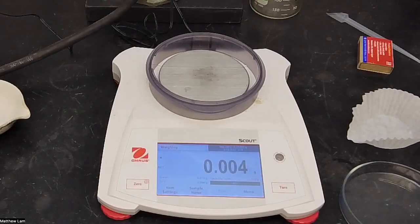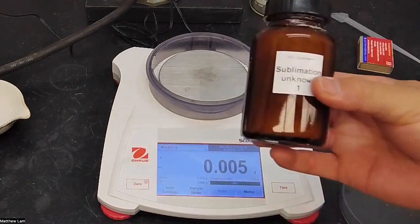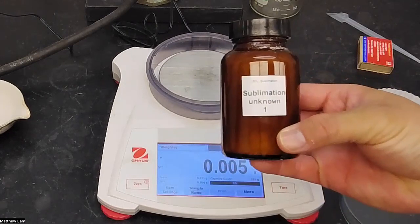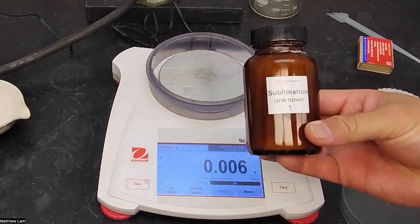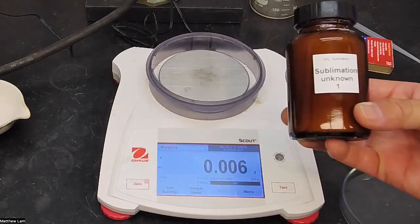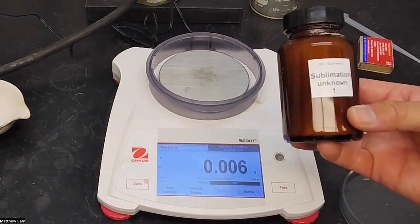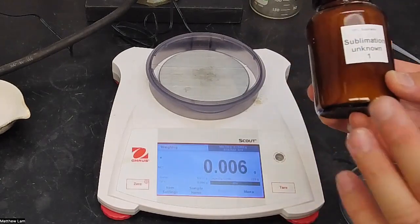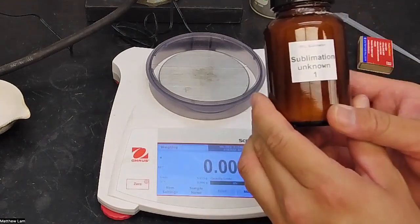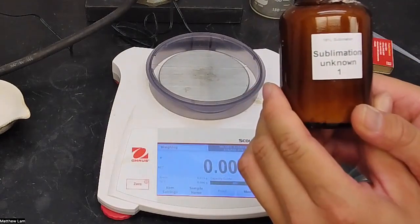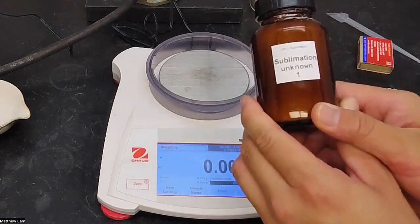For part B of the sublimation experiment, we are going to take an unknown mixture and separate them based on their properties. This mixture here is composed of ammonium chloride, sodium chloride, and sand.